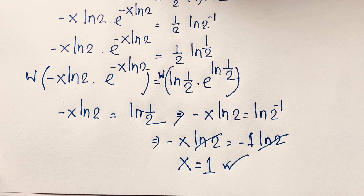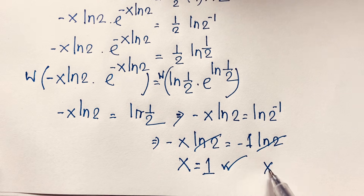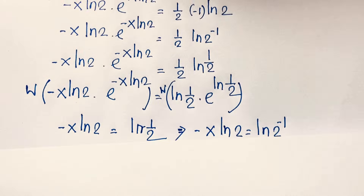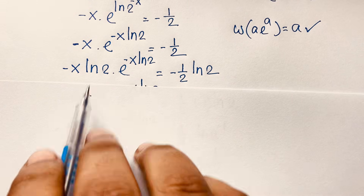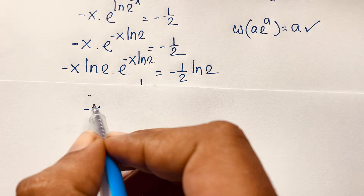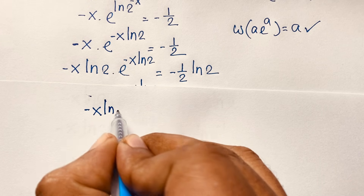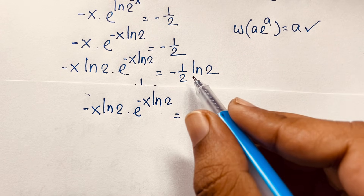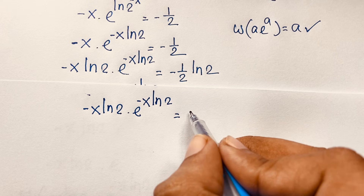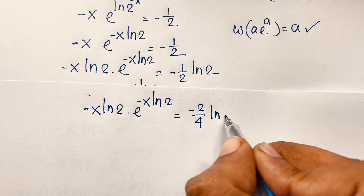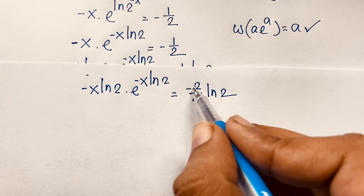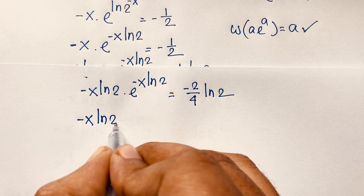This is our final answer — x equals 1 is the real solution from this step. But remember we also found x equals 2 as a correct answer. Now let me show how to obtain x equals 2 using this same method. Going back to the expression: minus x·ln2 times e to the power (−x·ln2) equals negative one half.